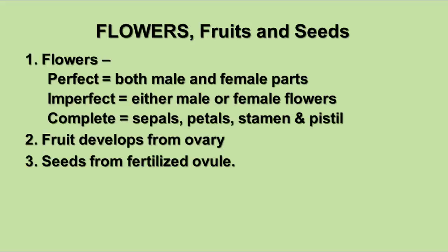Flowers can be perfect if they have both male and female parts. Some flowers are imperfect — they have either male or female parts only. Sometimes you have male and female flowers on the same plant; sometimes adjacent plants are either male or female. Complete flowers have all the flower parts: sepals, petals, pistils, and stamens. You can be perfect without being complete, but if you're complete, you're required to be perfect because complete includes the stamens and pistils. The fruit develops from the ovary.